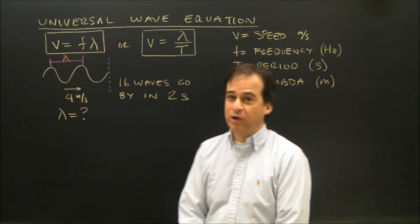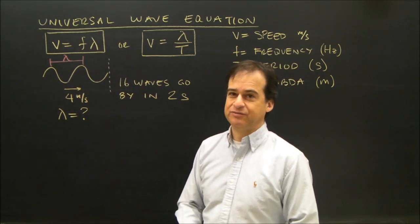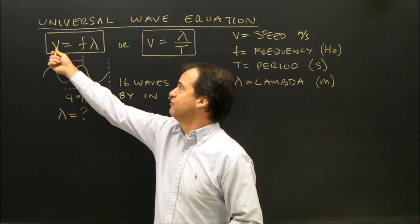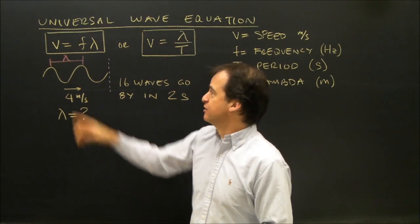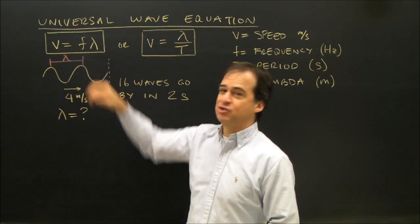The most important formula in waves, sound, and light is the universal wave equation. The universal wave equation is V equals F lambda. The speed of a wave is equal to its frequency times the wavelength.